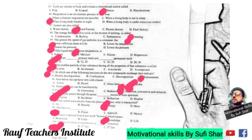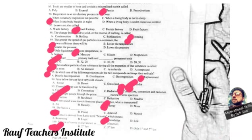Question 87: the food factory of a plant. The correct answer is the leaf. Leaves are the food factory — class 6 and class 7 science. The leaf contains chlorophyll, which allows plants to produce food.